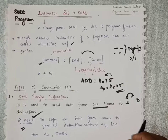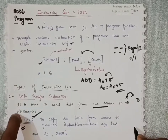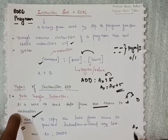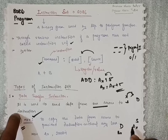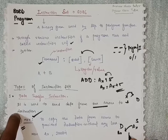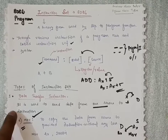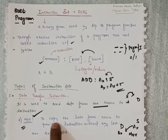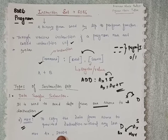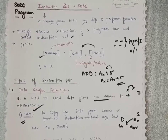Suppose we have a source called AX and a destination. From the source I want to copy all the data, so we will use the MOV function. For example: MOV AX, 1000H — the value 1000H will get copied into AX.